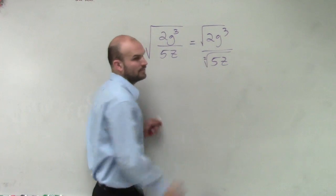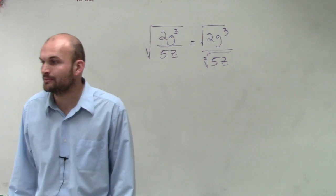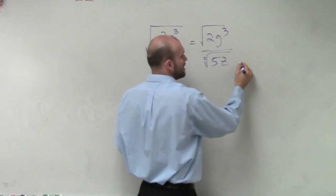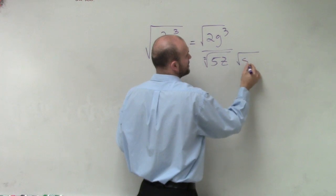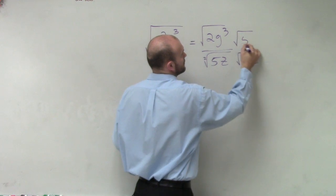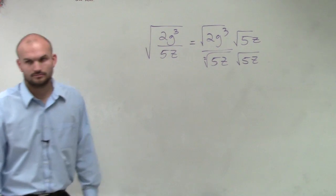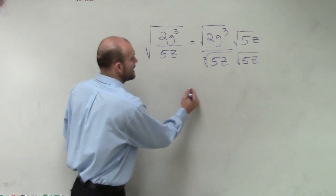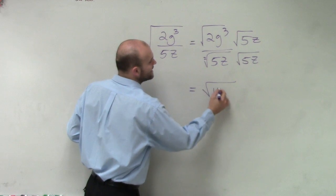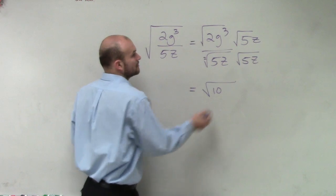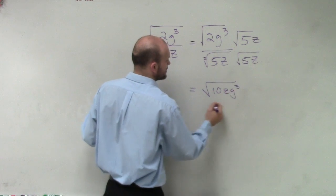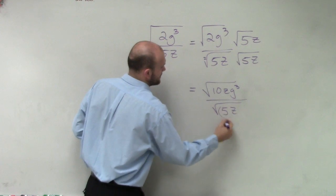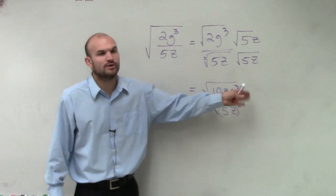Now, thankfully, we know that we're taking the square root of a number. So all we need to do to get this to be off the square root is we just need to simply multiply it by the square root of 5z. Because when we multiply the square root of 5z times the square root of 5z, what that is now going to produce is 10zg cubed divided by the square root of 5z squared. Well, what's the square root of something squared?